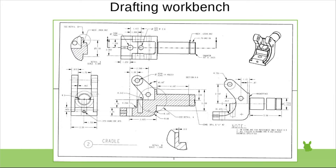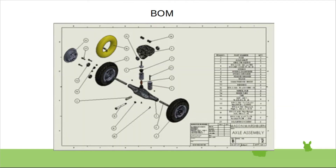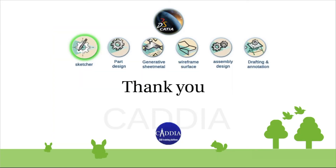The last module is the Drafting workbench. Here you will learn how to create drawing sheets to print objects' orthographic and section views with dimensions and tolerances for manufacturing. So in this whole course you are going to learn solid, sheet metal, and surface part designing, assembly design, and drawing sheet creation.